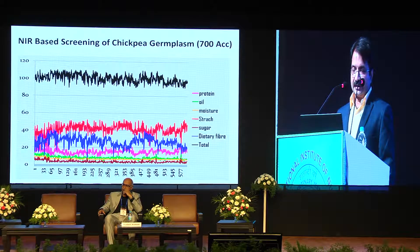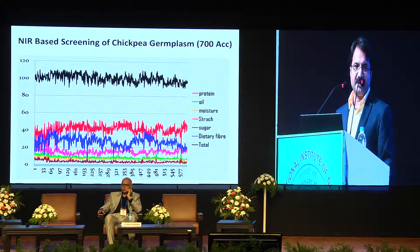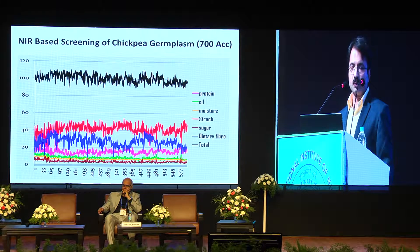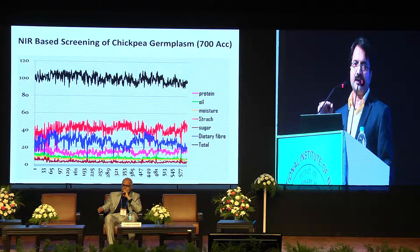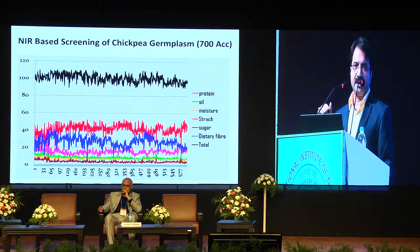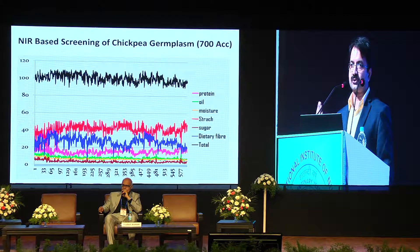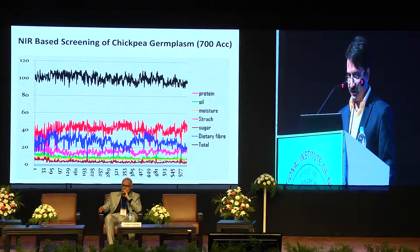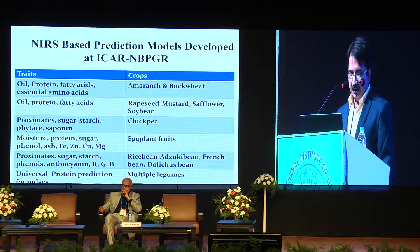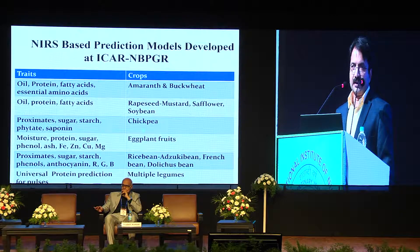An interesting validation: the sum of proximate components — with only ash (~3–4%) missing — falls well within the range of 100 ± 10, where available carbohydrate is the sum of total soluble sugar and total starch. These are some of the models developed at our laboratory.